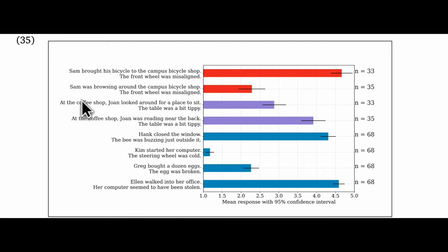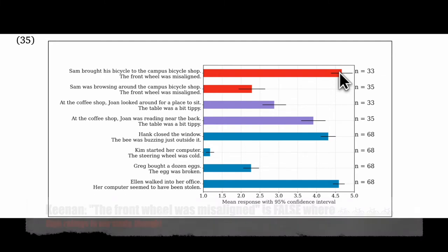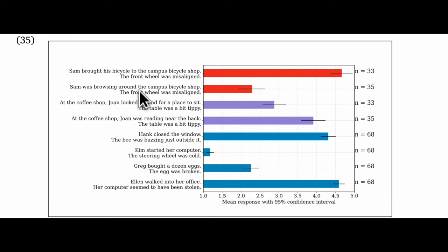The top two pairs are the crucial test items. For example, the first says: 'Sam brought his bicycle to the campus bicycle shop. The front wheel was misaligned.' This gets high ratings. But in this situation of a bike shop, there are many front wheels. Thus, for Keenan, 'the front wheel was misaligned' is almost certainly false, and for Partee, it's undefined. Compare that with the second item: 'Sam was browsing around the campus bicycle shop. The front wheel was misaligned.' This gets low ratings that might be more consistent with the Partee analysis, and maybe the Keenan one if false sentences are apt to get low ratings.